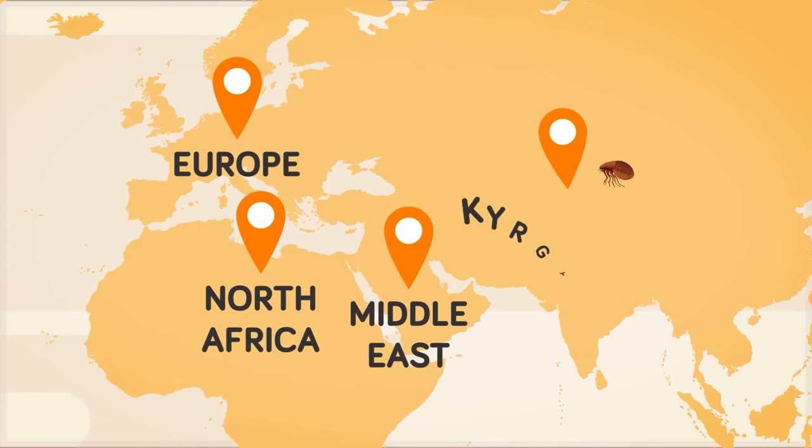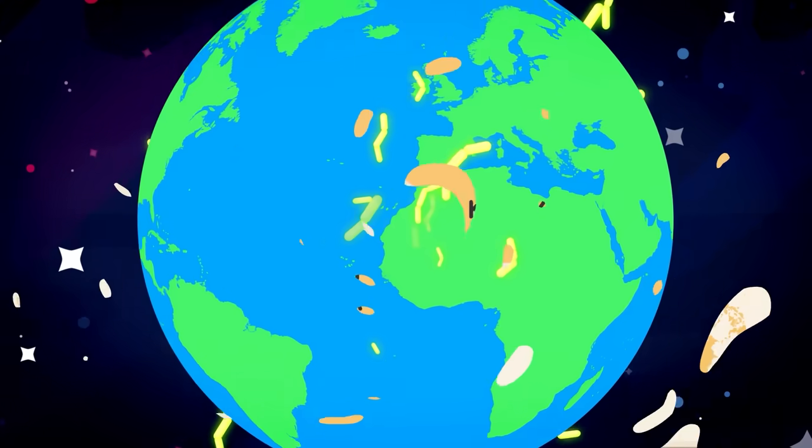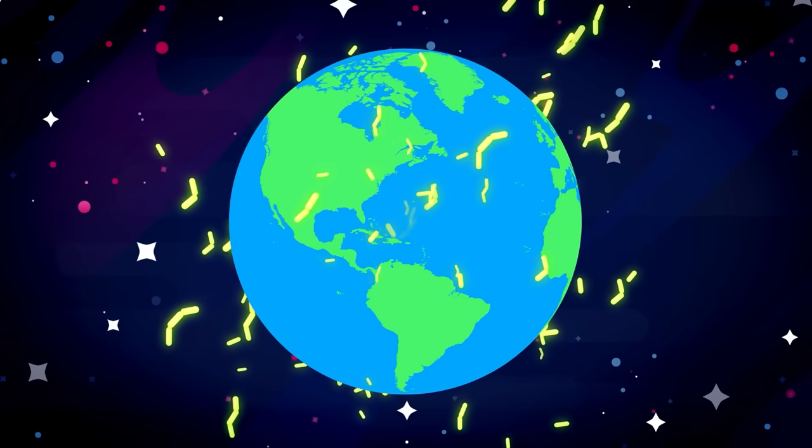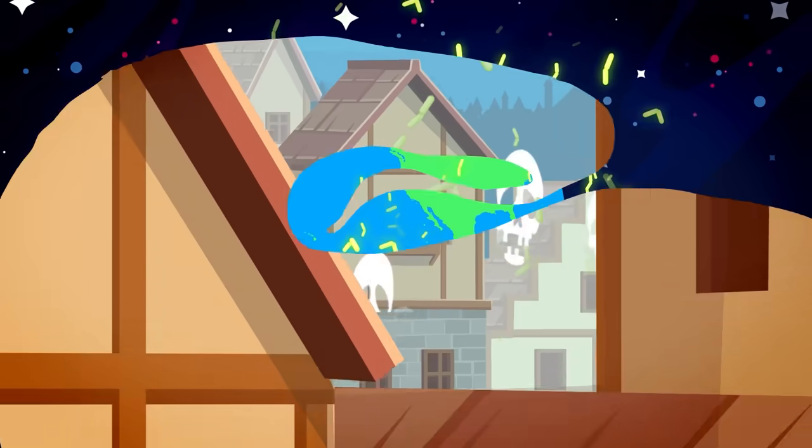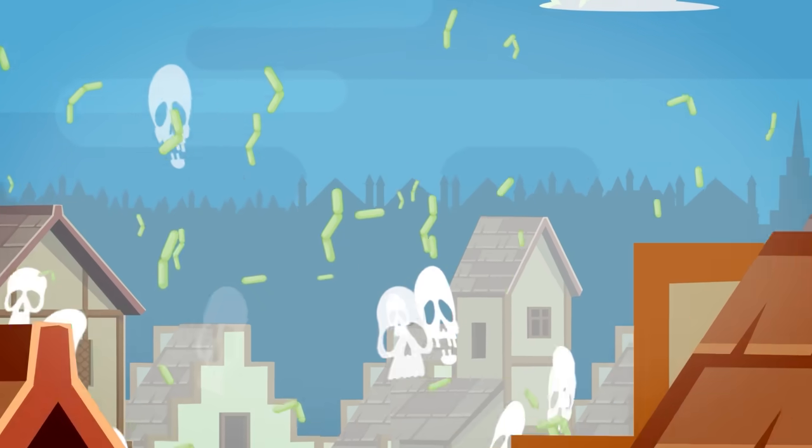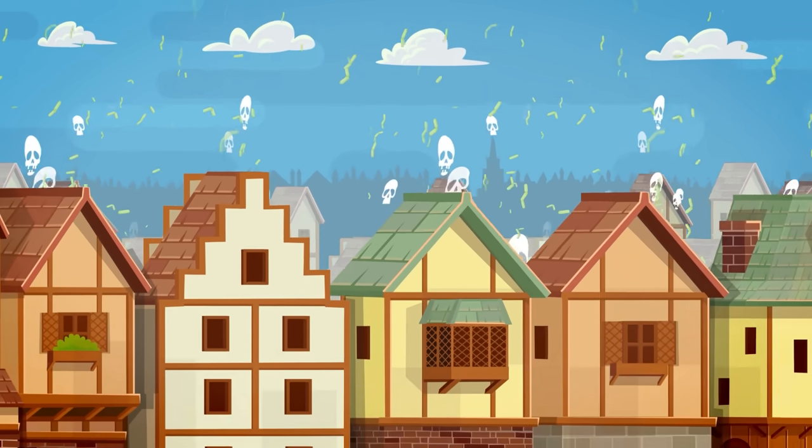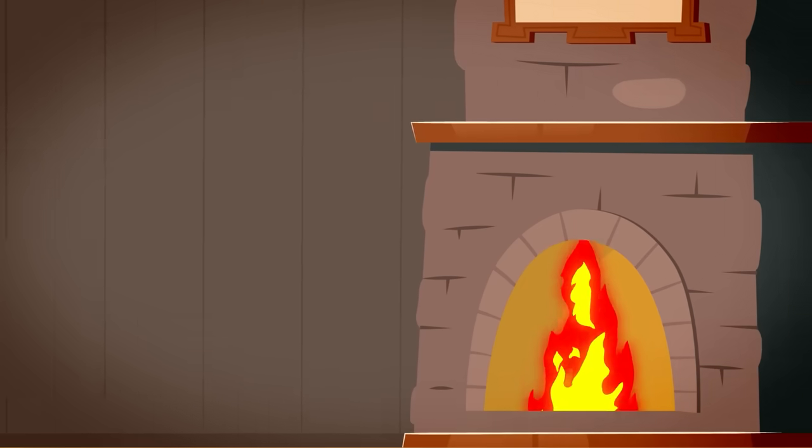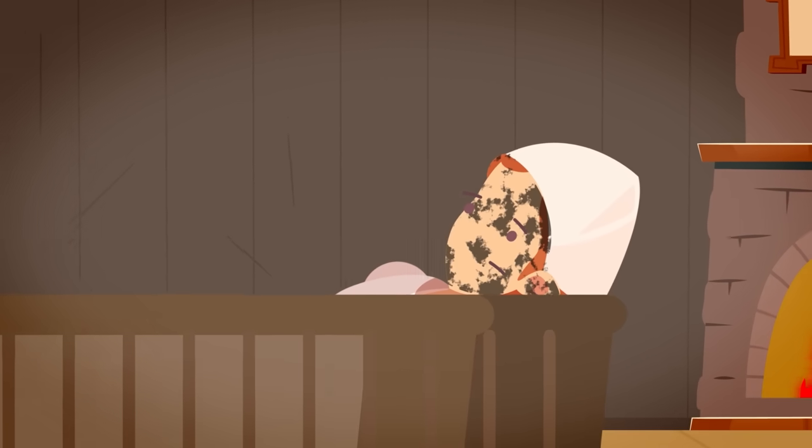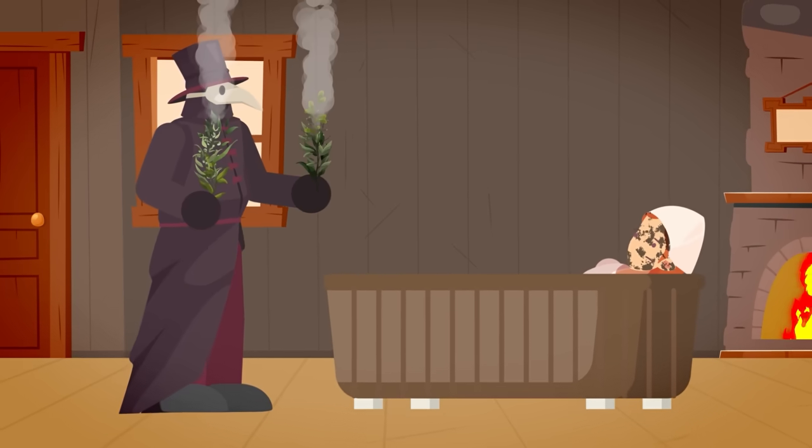It was the bacteria from Kyrgyzstan that had the ability to hide within fleas and evolve as it was carried across the world. When the bacteria found its way to the more densely populated regions of Europe, it thrived. Like with all pathogens, every time it found a new host and started reproducing, there was a chance it would evolve into something stronger and more deadly. This is exactly what happened.